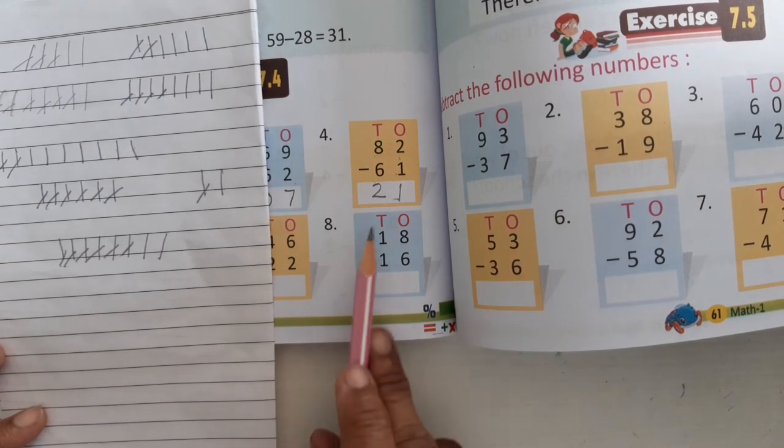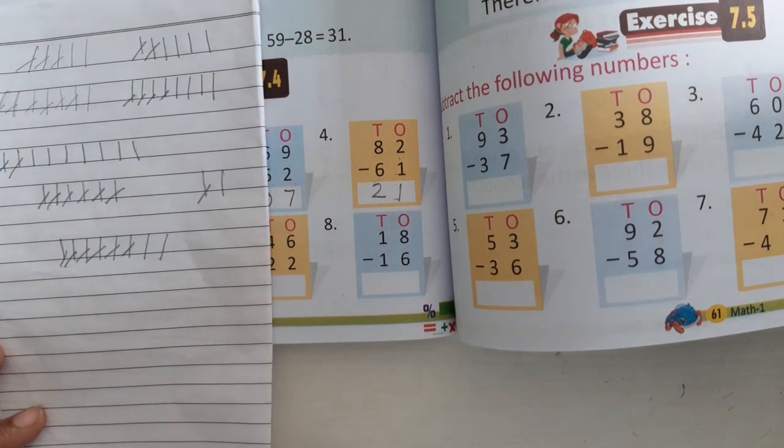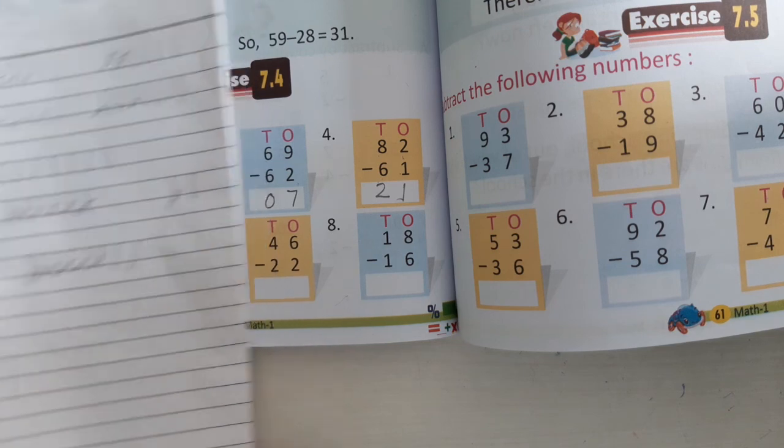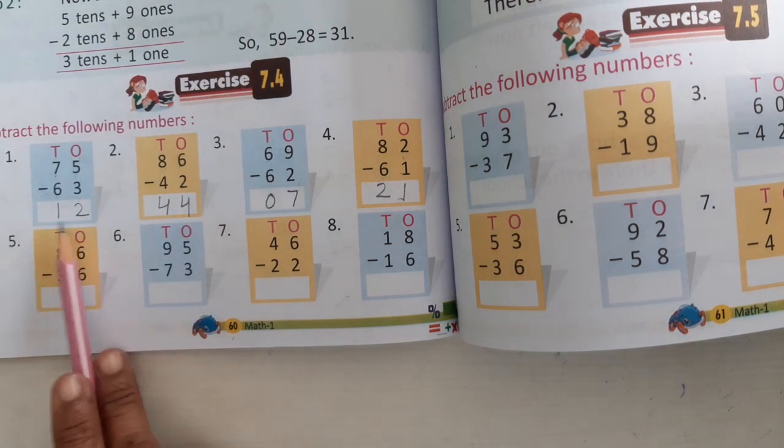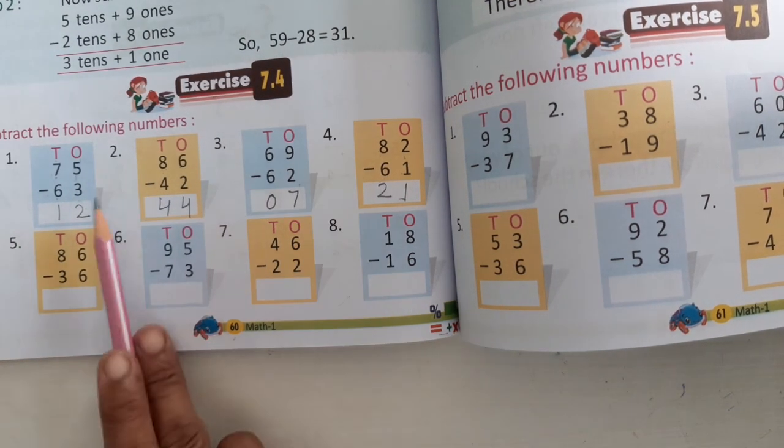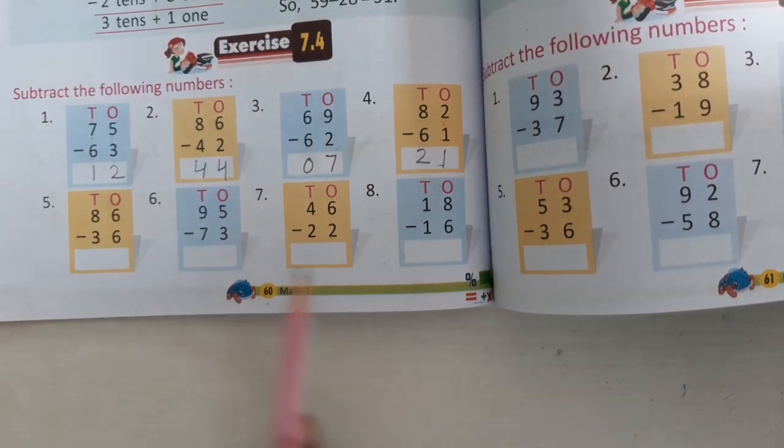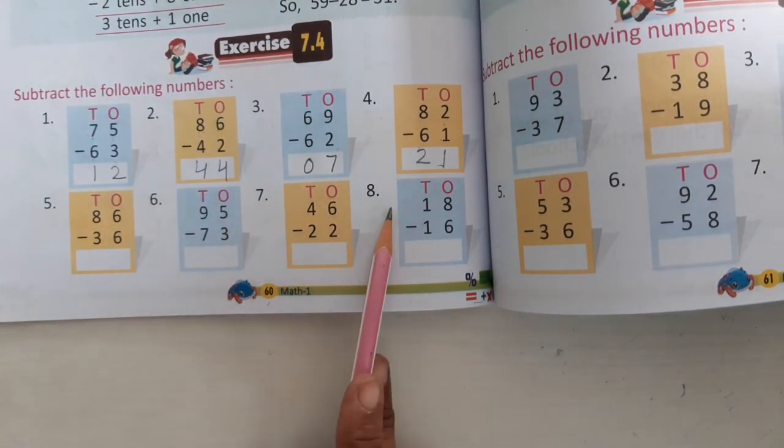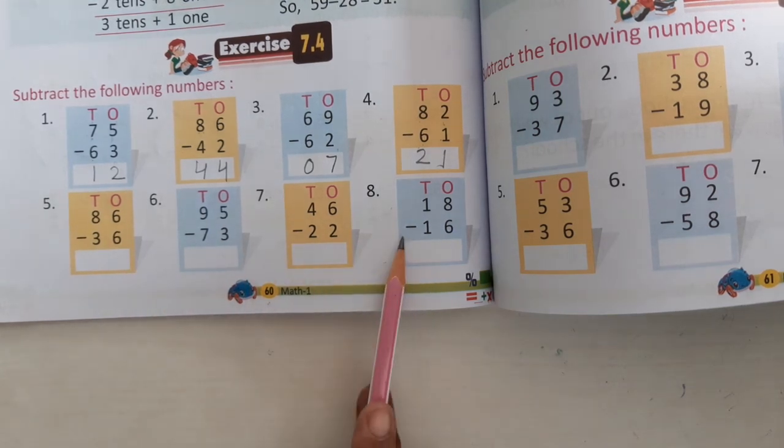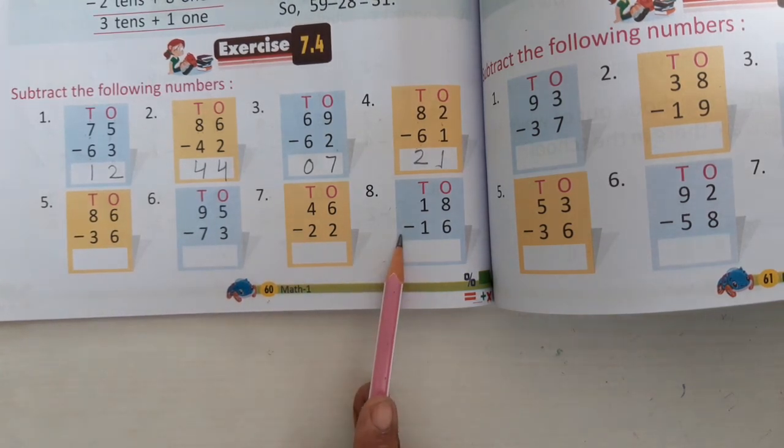And now we have to minus, so if we have to show you, to see the questions. The questions are 5, 6, 7, 8. You can see them.